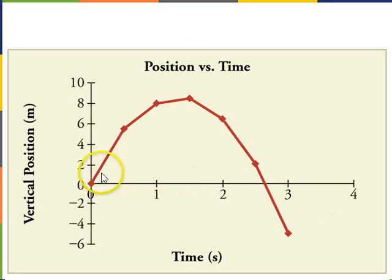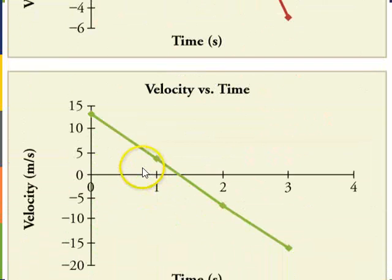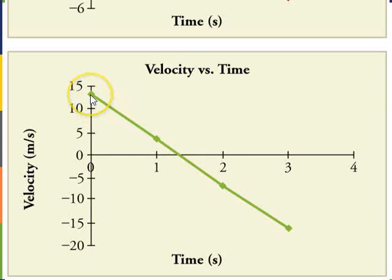So we can graph position versus time for any object which goes up and then reaches some maximum height and comes back down again. And this looks like it reaches its maximum position at somewhere around about one and a half seconds.